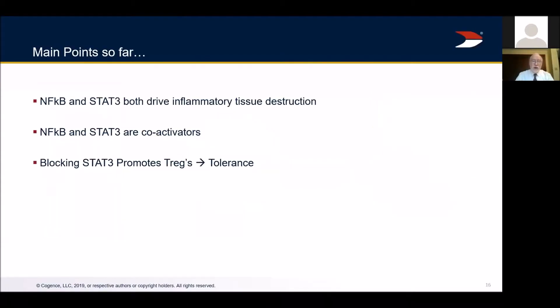So far: NF-κB and STAT-3 both drive inflammatory tissue destruction and are coactivators. Blocking STAT-3 looks pretty good because it promotes regulatory T-cells that promote immune tolerance. Now we have to talk about neuron-microglial interactions.